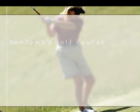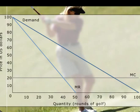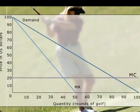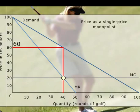Market research has produced a demand curve from which a marginal revenue curve is derived. The marginal cost, MC, measures the cost of supplying an additional round of golf. The price, generated from the intersection of the MR and MC curves, is set at $60 per round of golf.